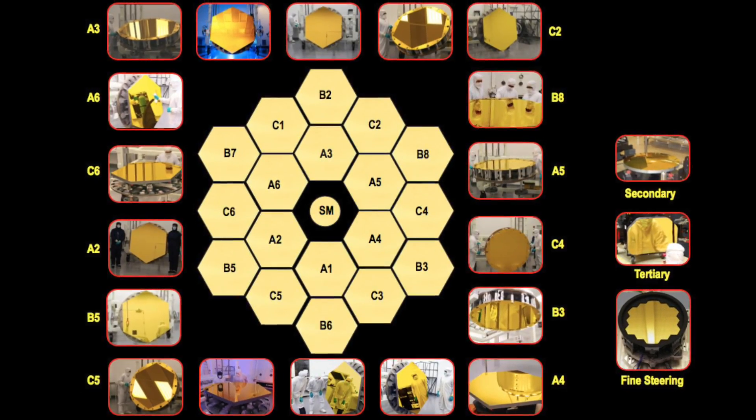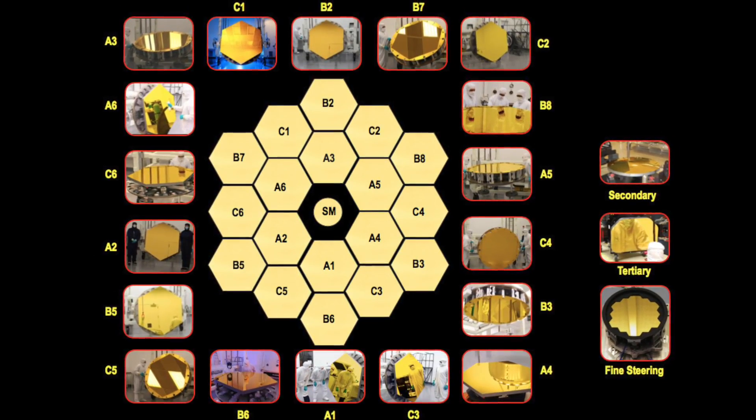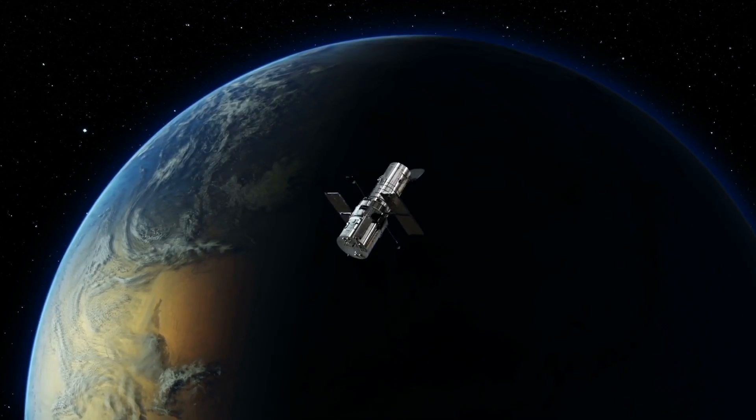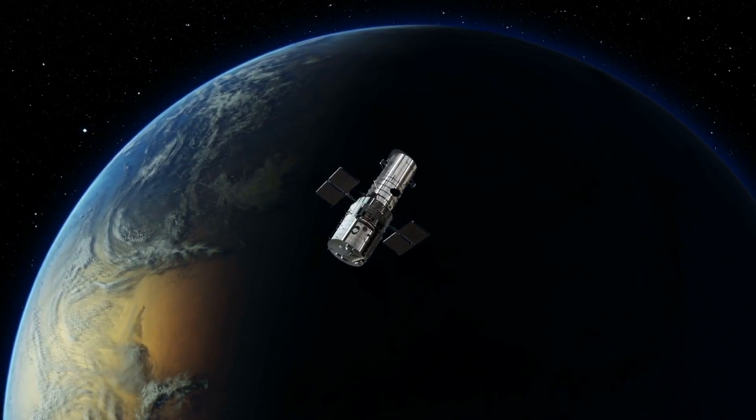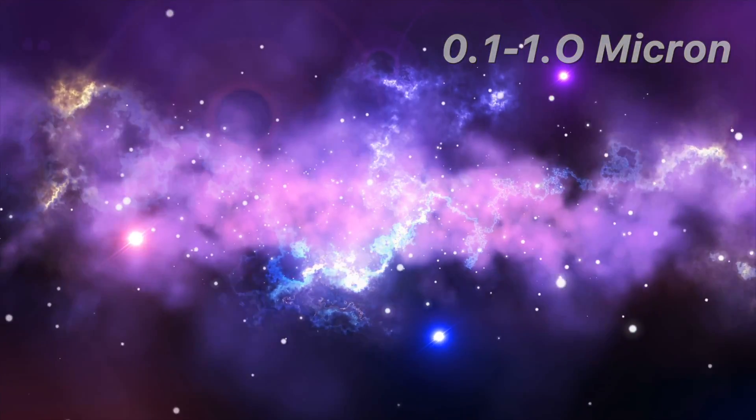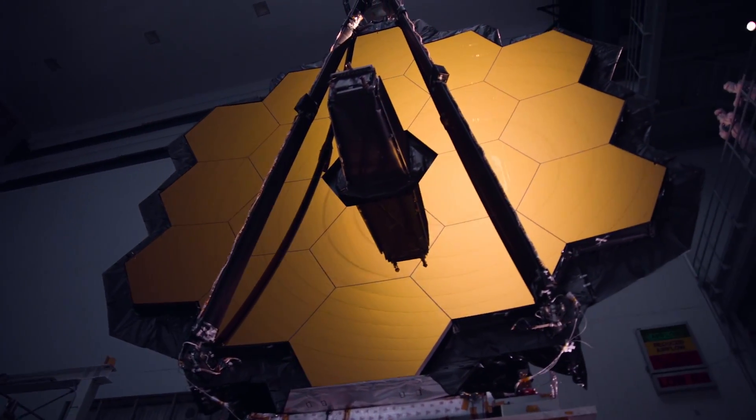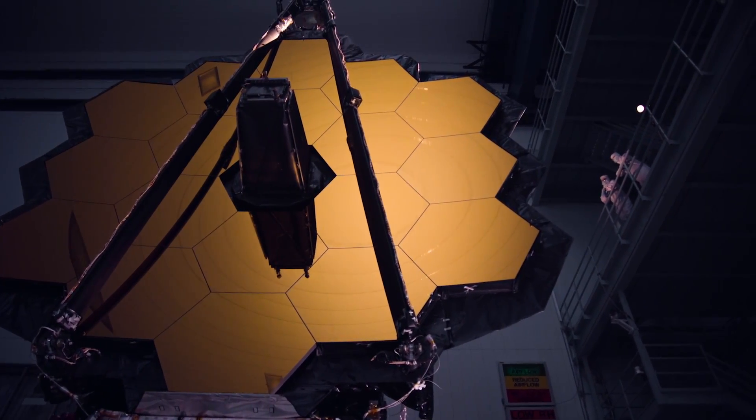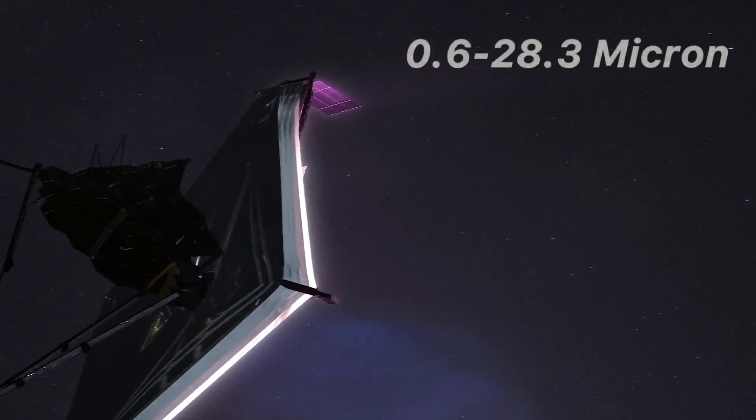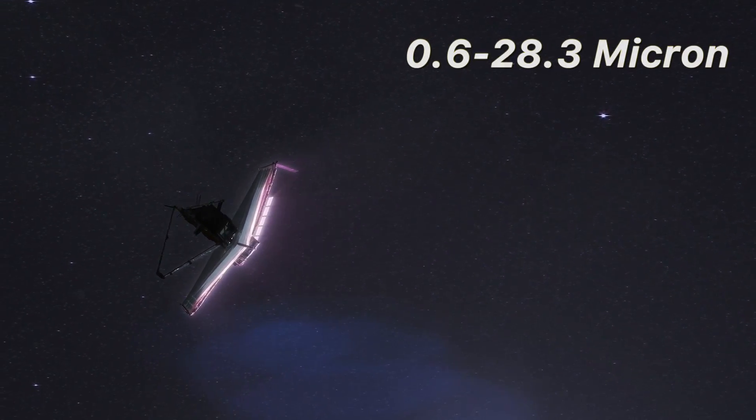This gives the new James Webb Telescope a light collecting area of about 6.25 times as large as Hubble's. Unlike Hubble, which observes in the near ultraviolet, visible and near infrared of 0.1 to 1.0 micron, James Webb Telescope will observe in a lower frequency range, from long-wavelength visible light through mid-infrared of 0.6 to 28.3 microns.